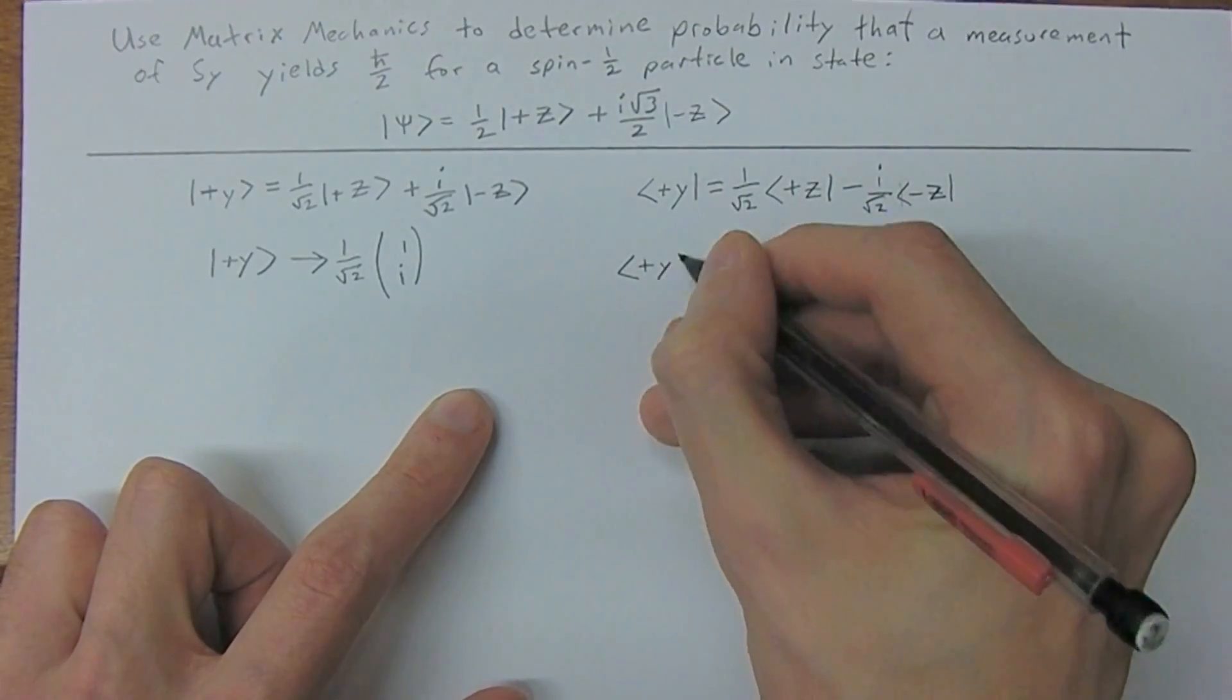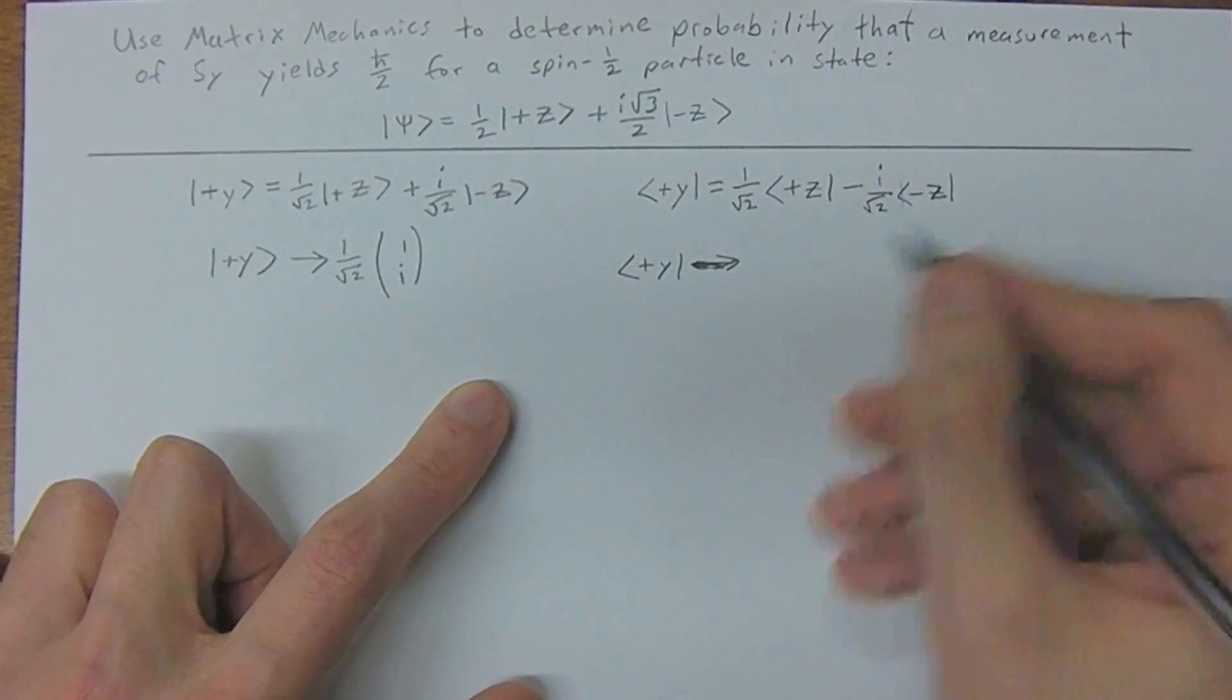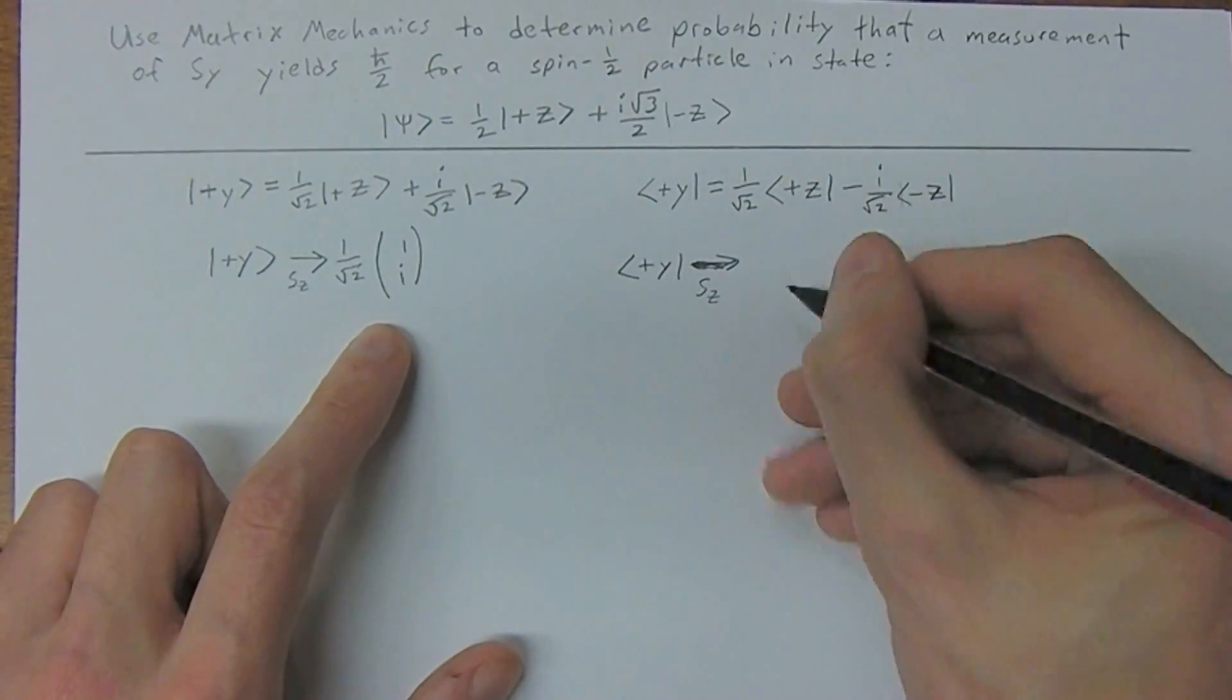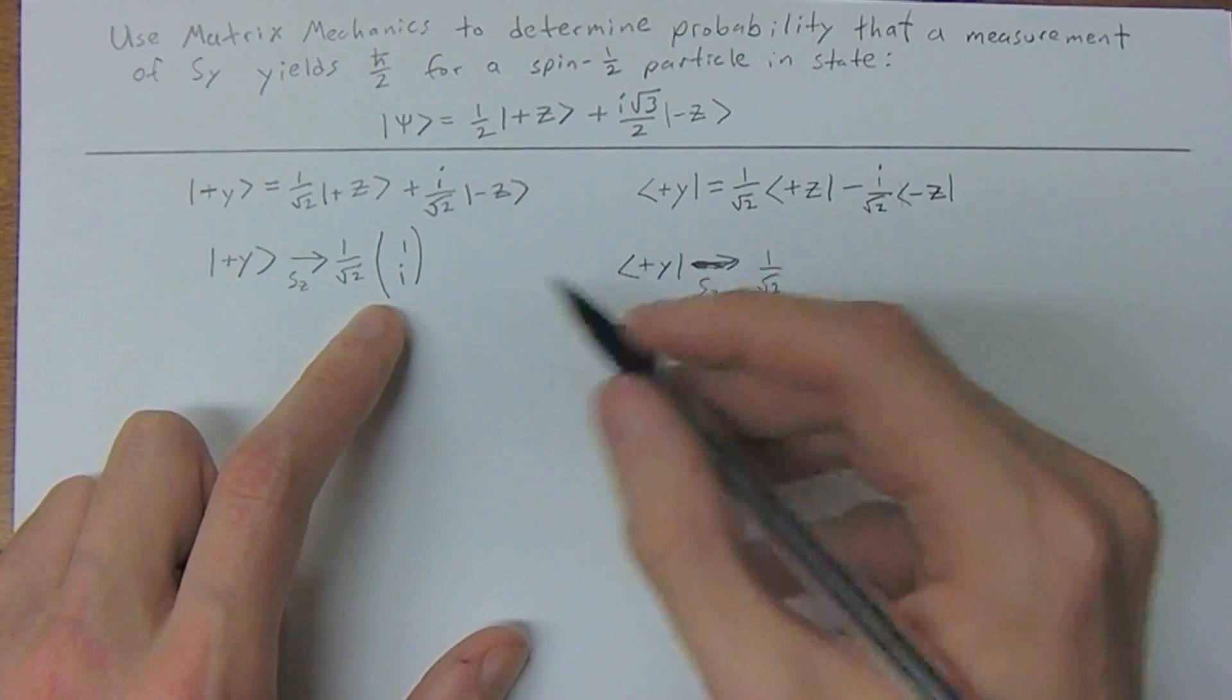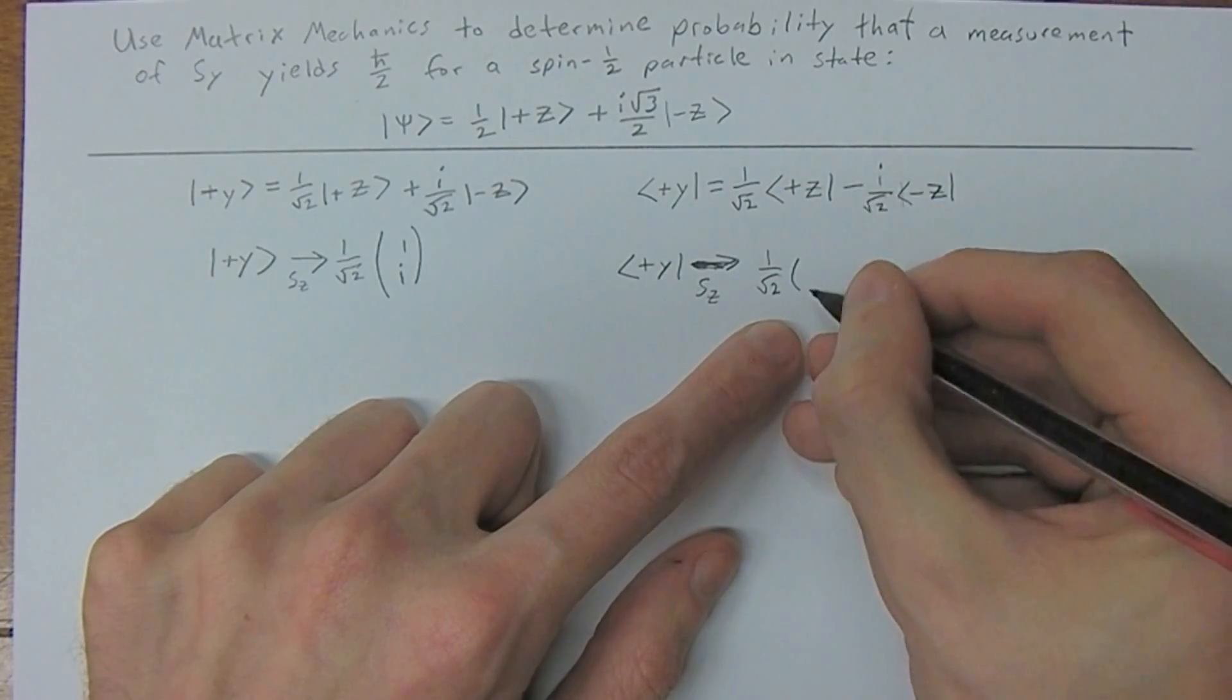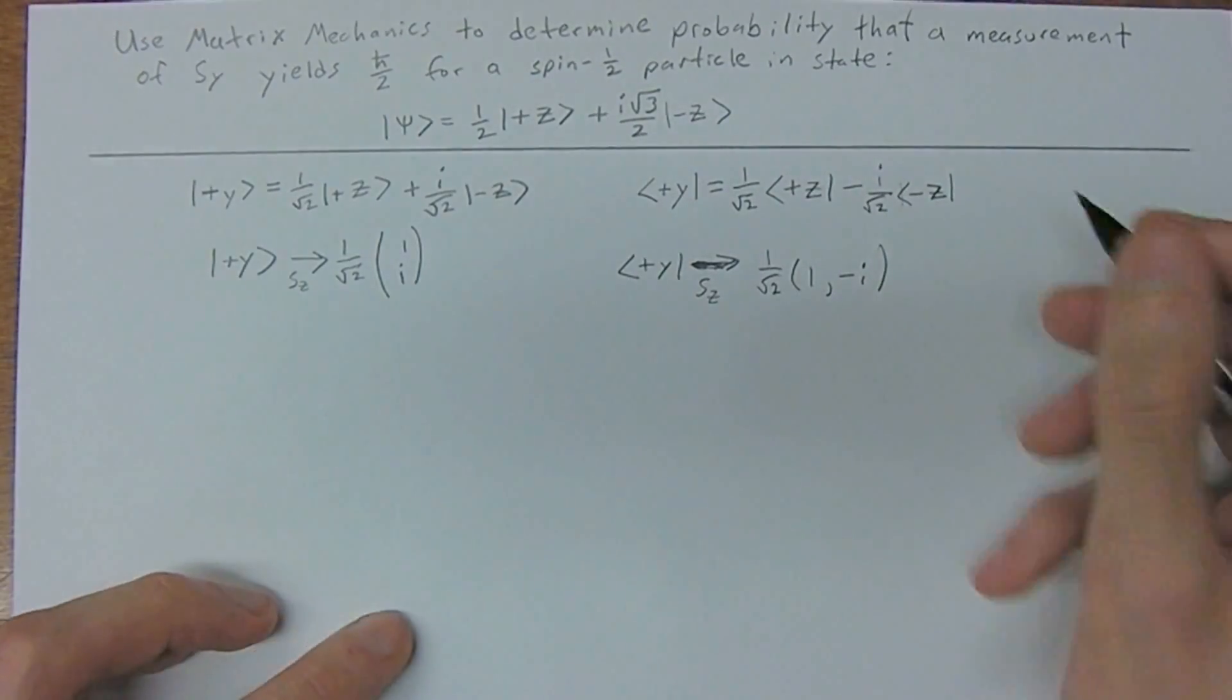And now similarly, so plus y in the s_z basis. So we're going to have 1 over square root of 2 again, we just pulled that out the front of our matrix, and now a bra is a row vector. So we're just going to have 1 comma minus i.